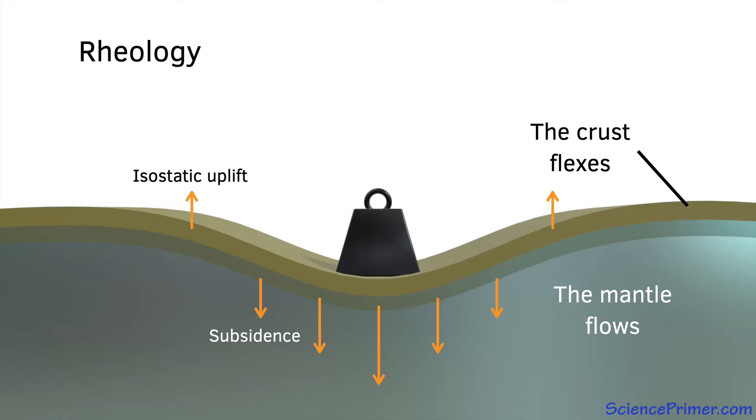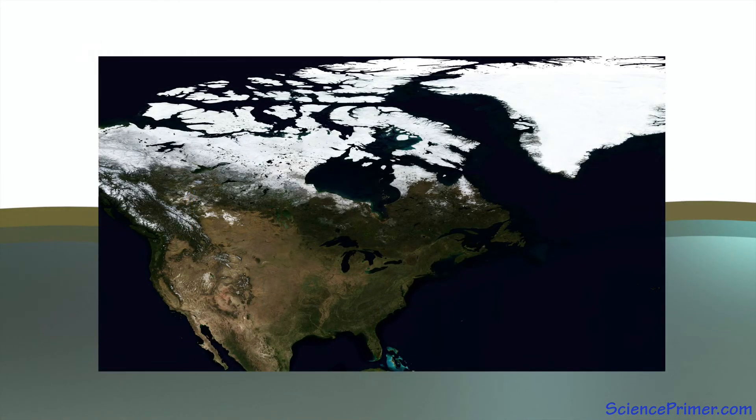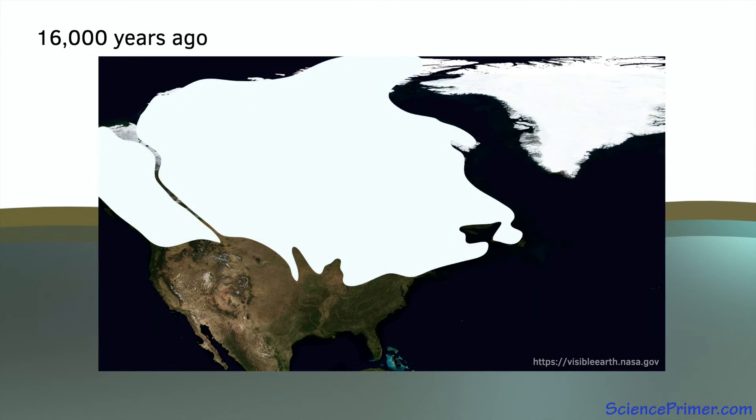A climatic process that redistributes large amounts of weight across the surface of the earth over geological time is glaciation. During the last ice age, vast quantities of ice formed. 16,000 years ago, the middle of the North Atlantic continent was weighed down with ice thousands of meters thick. This added weight caused the continental crust to sink and the surrounding area to rise.